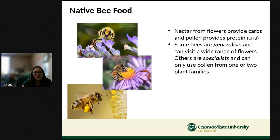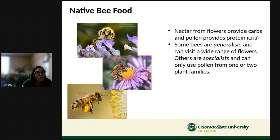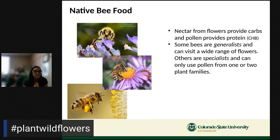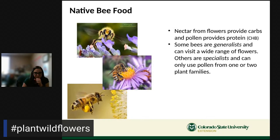What do native bees eat? They eat nectar — the liquid they suck from flowers — which provides carbohydrates, like bread does for us. Sometimes they also eat pollen, which provides protein. Some bees are generalists and can visit a wide range of flowers. Some bees are specialists and can only use pollen from one or two different plant families, so they need a very specific type of flower.